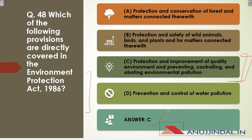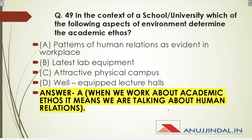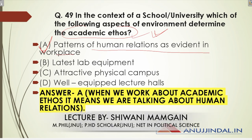Question 49: In the context of a school or university, which of the following aspects of environment determines the academic ethos? When we talk about academic ethos, we always talk about human relations. The correct answer is patterns of human relations as evident in the workplace. Connecting word-to-word: academic ethos relates to human relations, and the rest of the three options are eliminated.